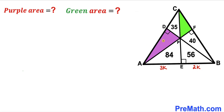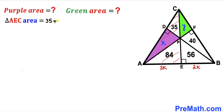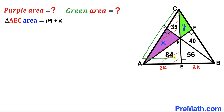Let me label the area of the purple triangle as x and the area of the green triangle as y square units. Now let's focus on right triangle AEC. The area of the whole triangle AEC is the sum of all three individual areas: 35 plus x plus 84. Adding the like terms, that gives us 119 plus x. So the area of the big right triangle AEC is 119 plus x.